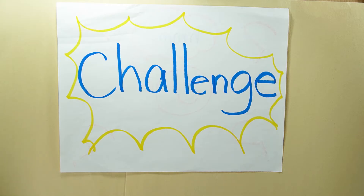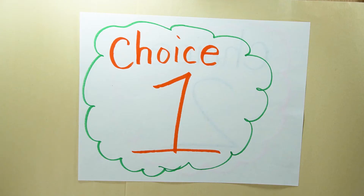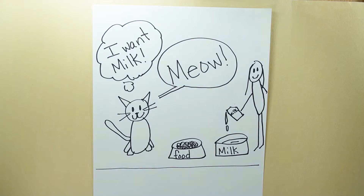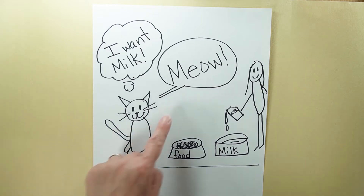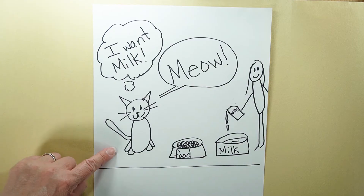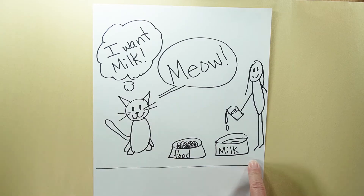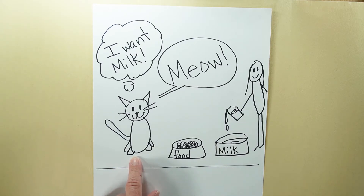For this week's challenge you'll have several choices — choose the one that's the best fit for you. Choice number one: create one picture that tells us a story using speech bubbles or even thought bubbles. I drew a cat with both a thought bubble and a speech bubble — 'I want milk' is what the cat is thinking, but he's really yelling 'meow,' and the owner knows exactly what the cat wants. Create your own picture!